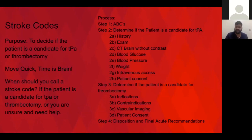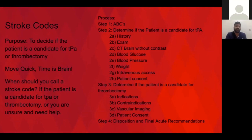Stroke codes — I know this is the main thing a lot of medicine residents ask about. The key thing to remember is the purpose of a stroke code: it's really to decide if the patient is a candidate for TPA or thrombectomy. I always quiz medical students on this, and most say it's to figure out if the patient's having a stroke — but that's not necessarily true. If you want to know if they're having a stroke, you can just order an MRI.